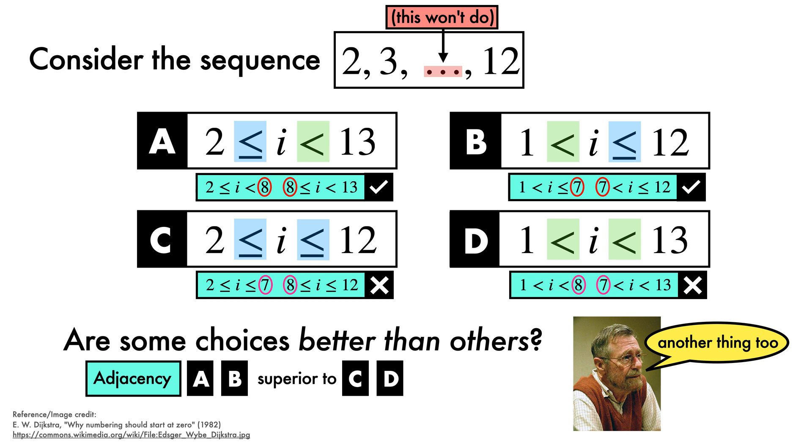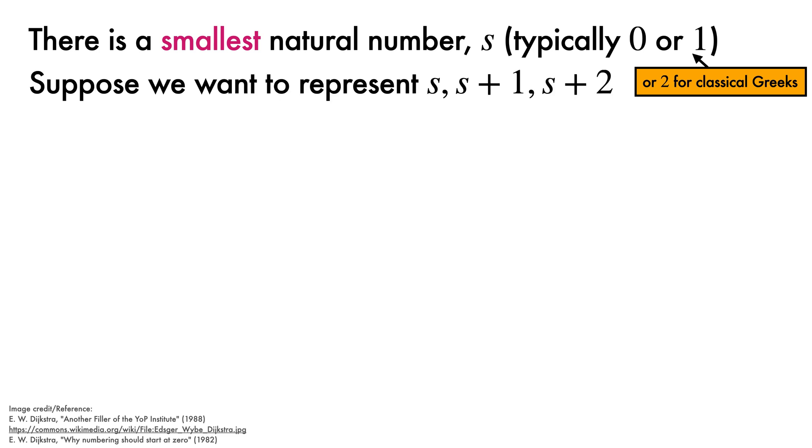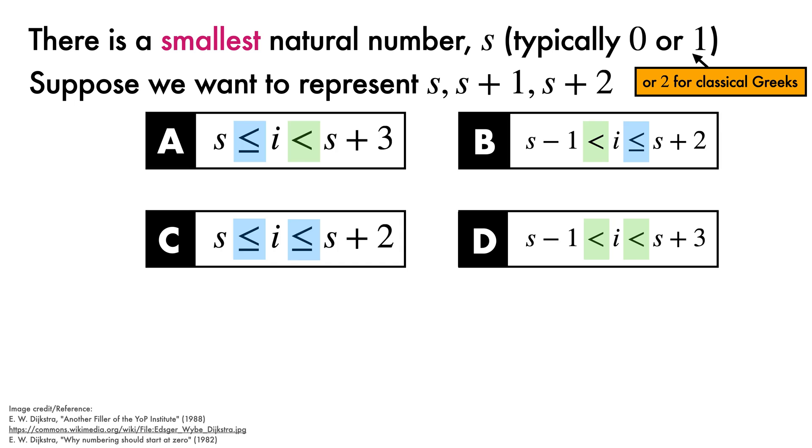However, these rules do not tell us which of A and B is preferable, so Dijkstra considers another line of attack. There is a smallest natural number, let's call it S, which in modern mathematics is typically taken to be 0, but sometimes 1. Dijkstra himself notes that the classical Greeks considered 2 as the smallest number. Suppose we want to write the sequence of three numbers, S, S plus 1, and S plus 2.